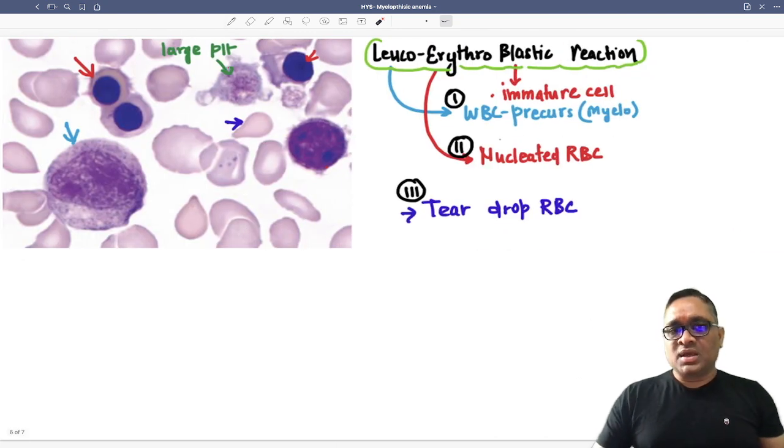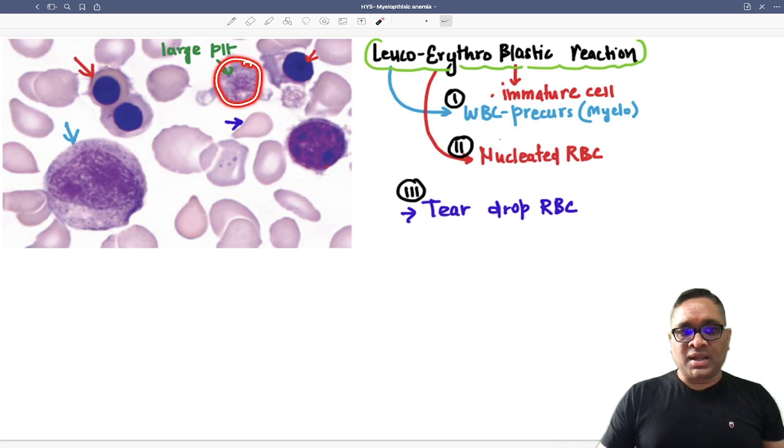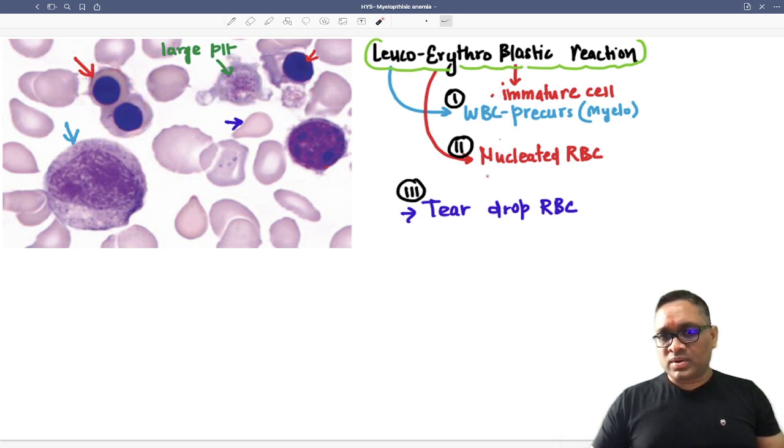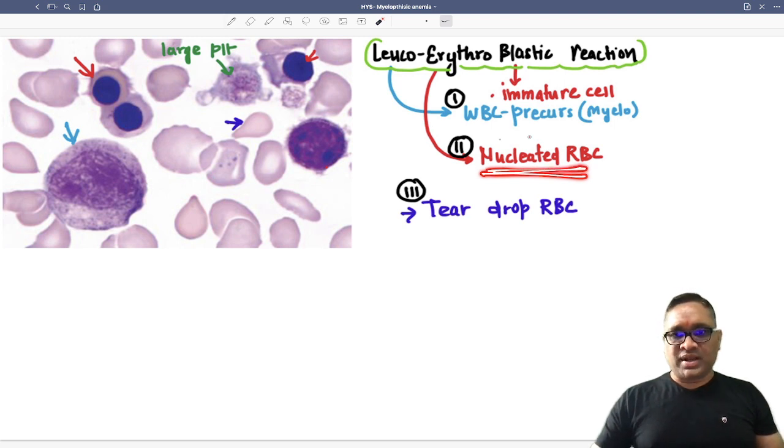So it will be looking like this. You can see this is a very large platelet and these are nucleated RBCs. So immature nucleated RBC is immature RBC.